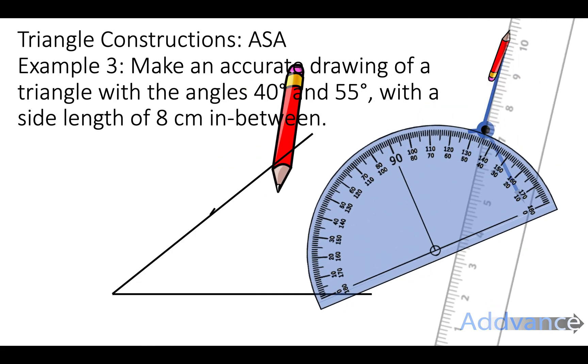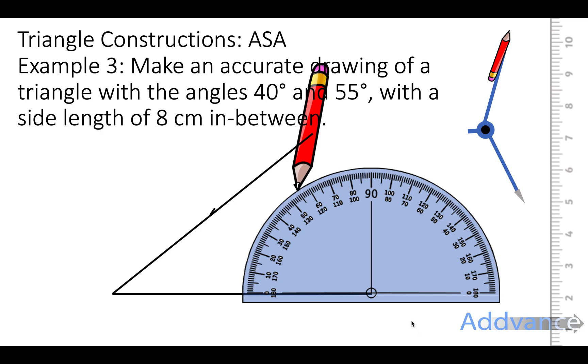Now we're going to draw a 55 degree angle from the other side of the line. We put the protractor's bullseye over the end of this line and then we count 0, 10, 20, 30, 40, 50, 55 degrees and we put a dash here.